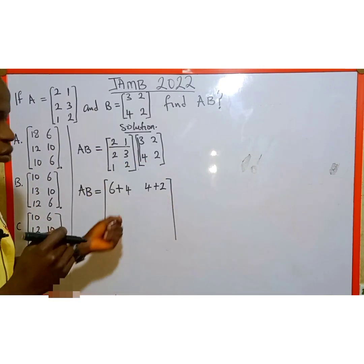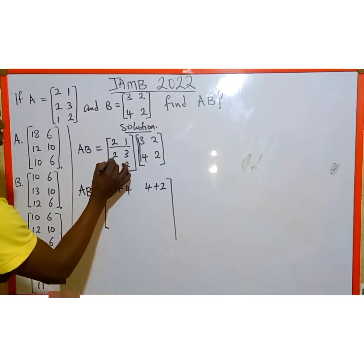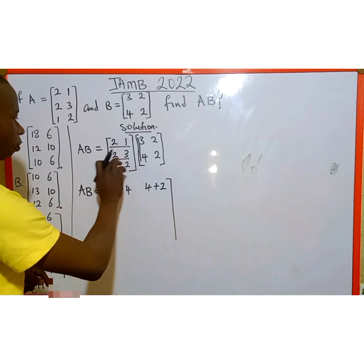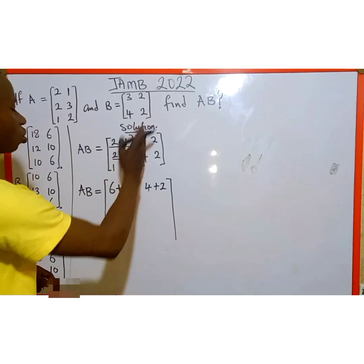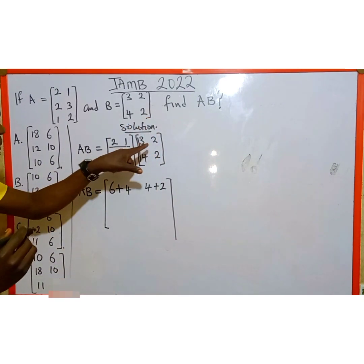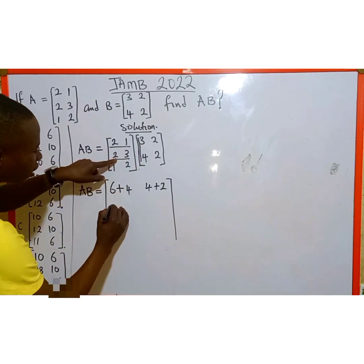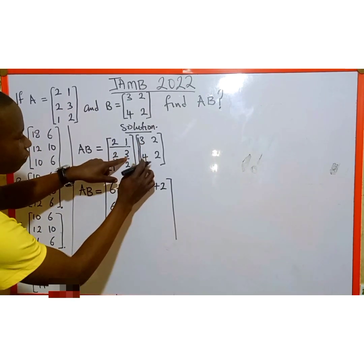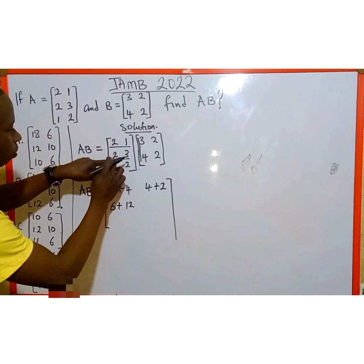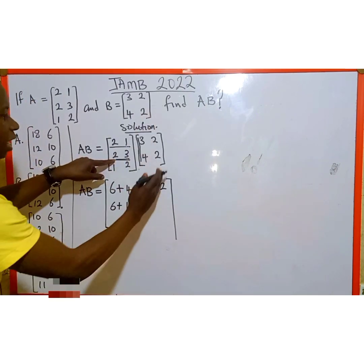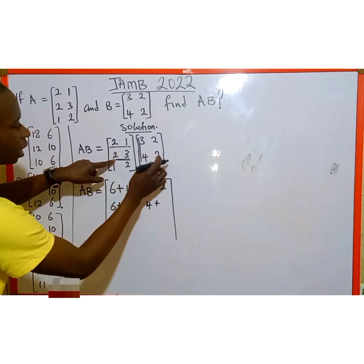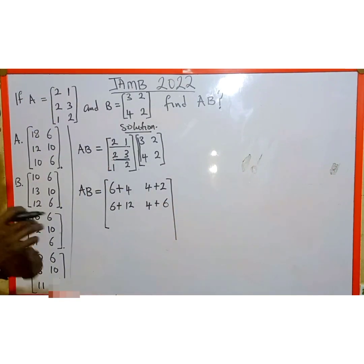We are done with the first row. Coming down to the second row, we use this row to multiply by the first column of matrix B and the second column of B. So 2 multiplied by 3 gives 6, then plus 3 multiplied by 4 gives 12. Then for the second column: 2 multiplied by 2 gives 4, then plus 3 multiplied by 2 gives 6. We are done with the second row.